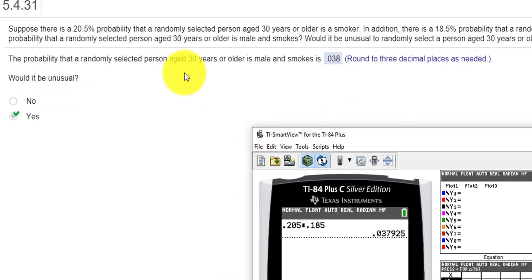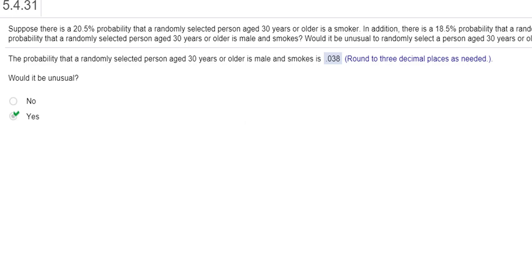And it says, would this be unusual? I'm going to say yes. Anything less than 5% is considered unusual. So this is 3.8%. So I'd say yes, this is unusual. So I hope that helps with these questions. Thank you for watching.